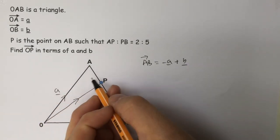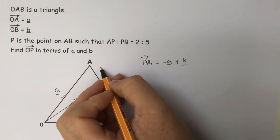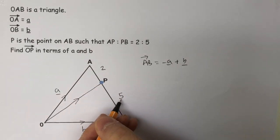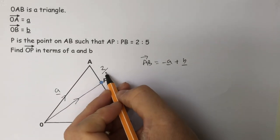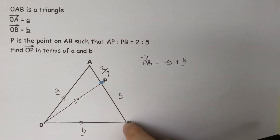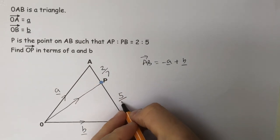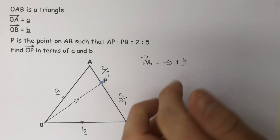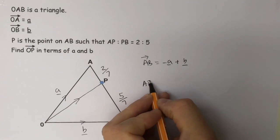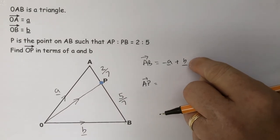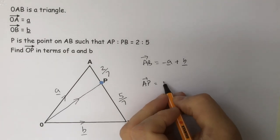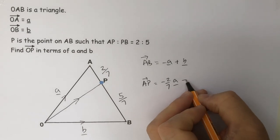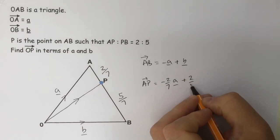We've been told that the ratio of AP to PB is two to five. That means P is two sevenths of the way down the line, or five sevenths of the way up. Because we've worked out AB, we can say that A to P is two sevenths of that vector — so two sevenths of minus a plus two sevenths of b.